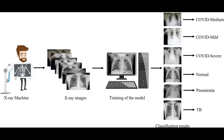Here, a traditional x-ray machine is used to capture x-rays. These x-rays are then passed through our developed model. This model can not only find whether the person has TB, pneumonia, or COVID, but can also find the severity of COVID if detected positive.